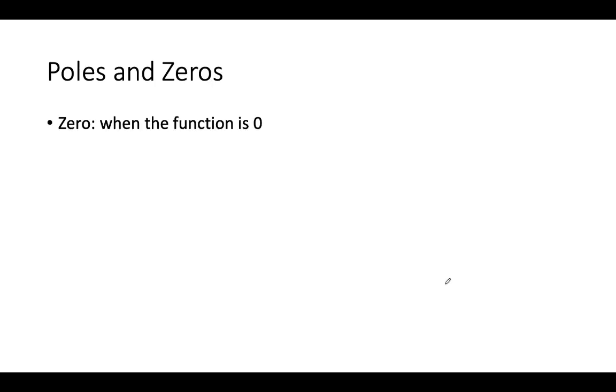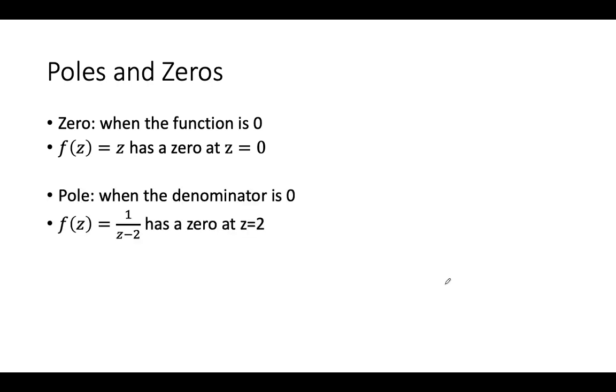So first let's start with poles and zeros. A zero is pretty straightforward, it's when the function is 0. A pole is when the denominator is 0, it just blows up like this. I should say this has a pole.